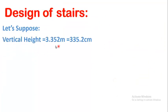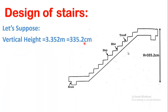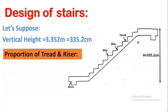Let's get started. Let's suppose the vertical height is equal to 3.52 meters, which is equal to 335.2 centimeters. As you can see here, this is the total height that we want to achieve — to reach from this level to this level.